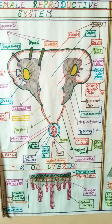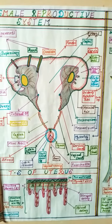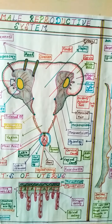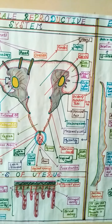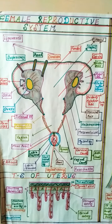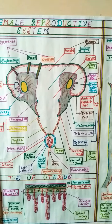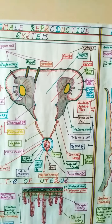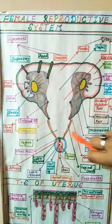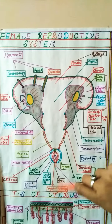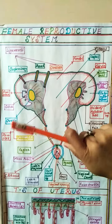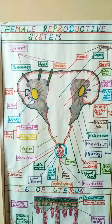Hello friends, welcome again. Today we will discuss the female reproductive system. The female reproductive system consists of primary sex organs and secondary sex organs. In this diagram you can see the structure of the female reproductive system, which consists of different types of organs.